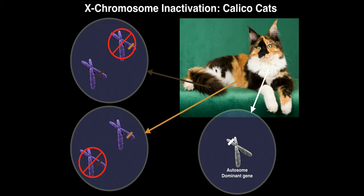The white spots on calico cats — like on the paw or chest — come from a separate autosomal gene, not an X-linked gene. Whenever this autosomal gene is expressed, it is dominant over both orange and brown, essentially acting as a blanking gene that prevents either color from being expressed, resulting in white fur.